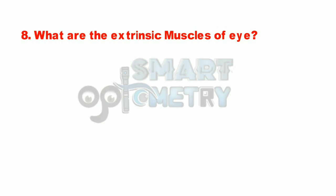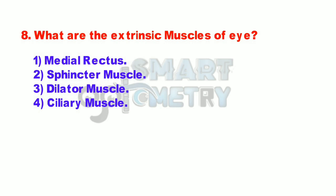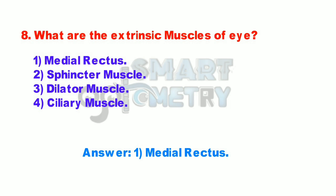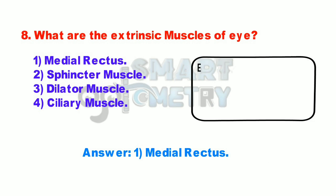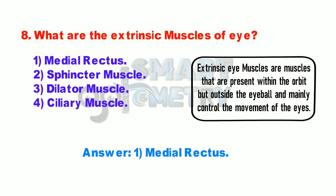Q8. What are the extrinsic muscles of the eye? 1. Medial rectus. 2. Sphincter muscle. 3. Dilator muscle. 4. Ciliary muscle. Extrinsic eye muscles are muscles that are present within the orbit but outside the eyeball and mainly control the movement of the eye.